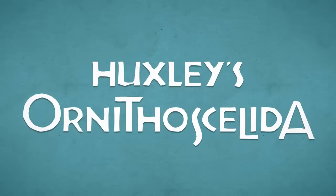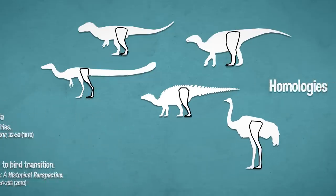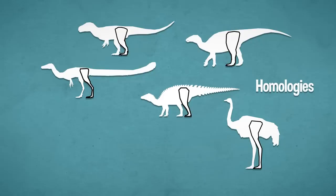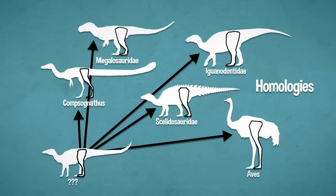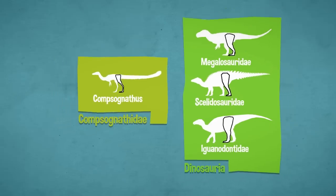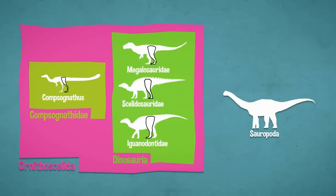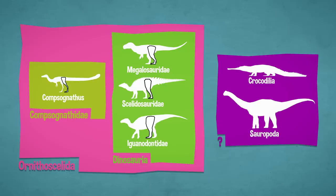We'll begin in 1870, when Thomas Henry Huxley first diagnosed Ornithoskeleta. Huxley researched what we'd call homologies between the dinosaurian reptiles and birds. Homologies are traits that are congruent across at least two organisms. Huxley saw how all known dinosaurs had bird-like hind limbs, from the ilium to the toes, and he thought this showed a common ancestry. He placed relatives of Megalosaurus, Solidosaurus, and Iguanodon in Dinosauria, relatives of Compsognathus in Compsognathidae, and both groups formed Ornithoskeleta — the bird-legged. Ornithoskeleta didn't include sauropods, or at least Cetiosaurus, likely because workers considered them crocodile relatives at the time.